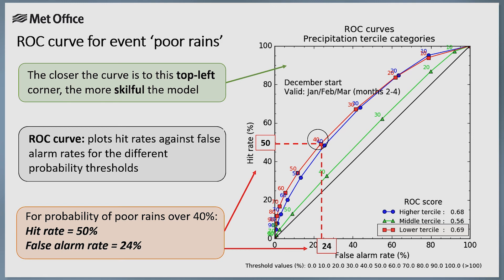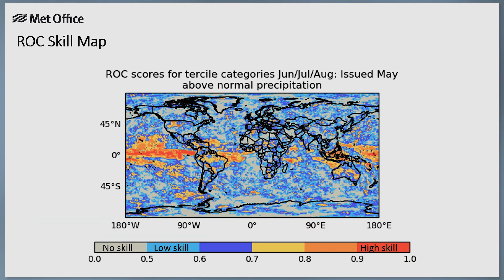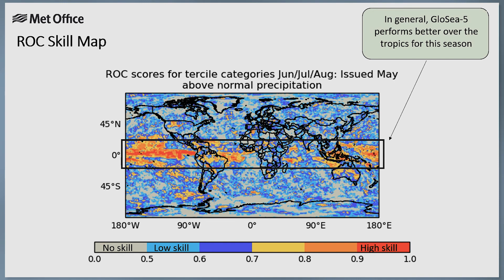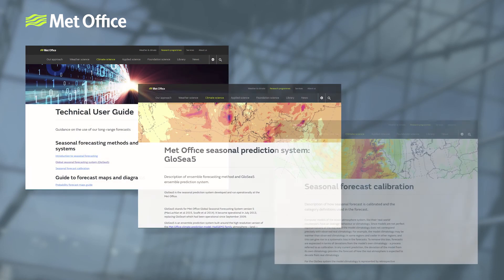ROC scores can also be displayed as maps by calculating these scores at each grid point in the model. The skill can vary considerably depending on season and location. This map shows the ROC scores for the GloSea5 system for the above average rainfall tercile category in the June to August season. In general, the model performs better over places in the tropics. Before communicating or using a seasonal forecast, it's very important to understand its skill. There are many other skill metrics available, such as reliability diagrams and prior skill score. For more information on ROC scores and reliability diagrams, you can look at the user guidance provided on the Met Office website.